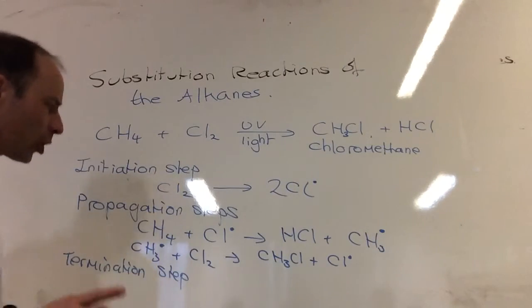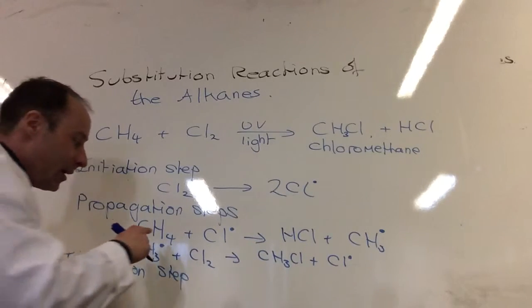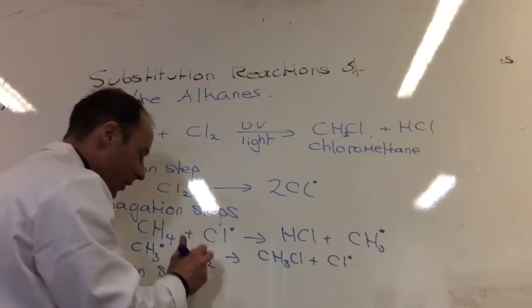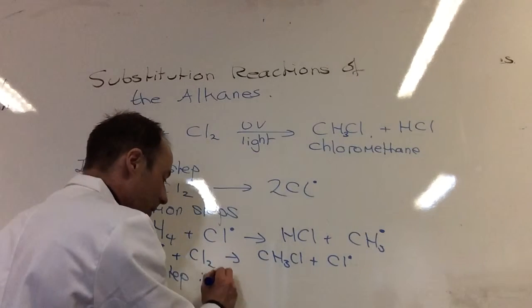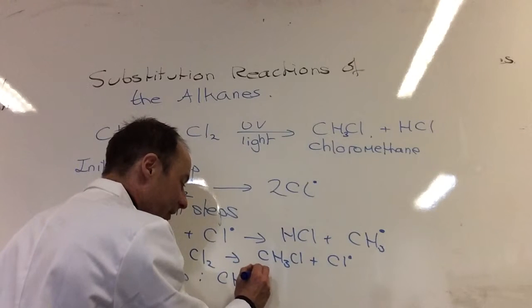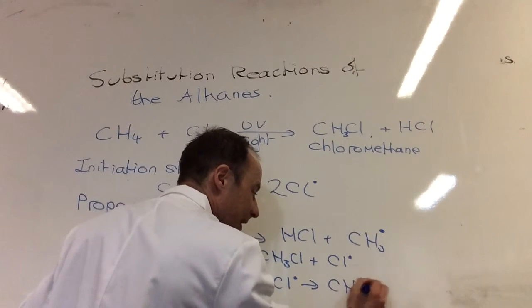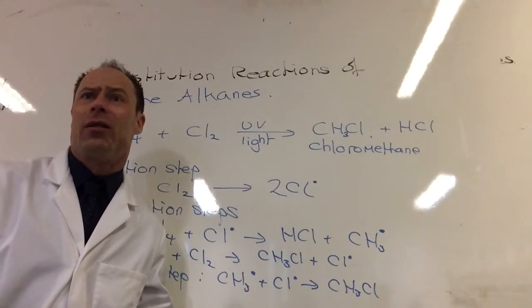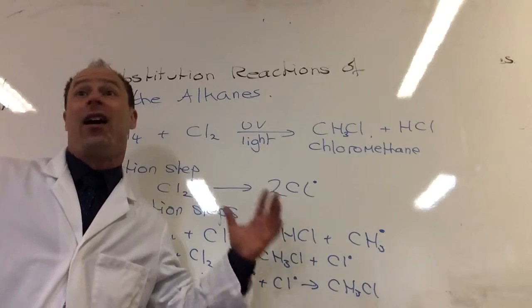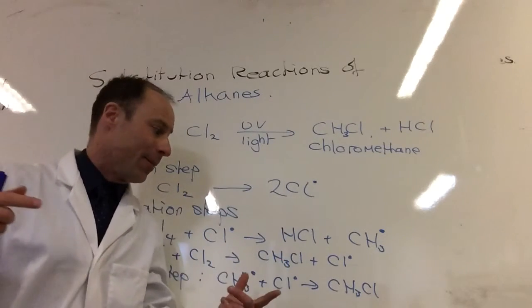However, what could happen in theory - remember this is all happening at the same time, it's all in the same pot. That boy and that boy could meet, and that would be what we would call a termination step. If a CH3 free radical meets a Cl dot free radical, it produces CH3Cl. Why do you think that's called termination? Because it goes through and means free radical. Yeah, I've used up two free radicals, so I've stopped that cycle happening.